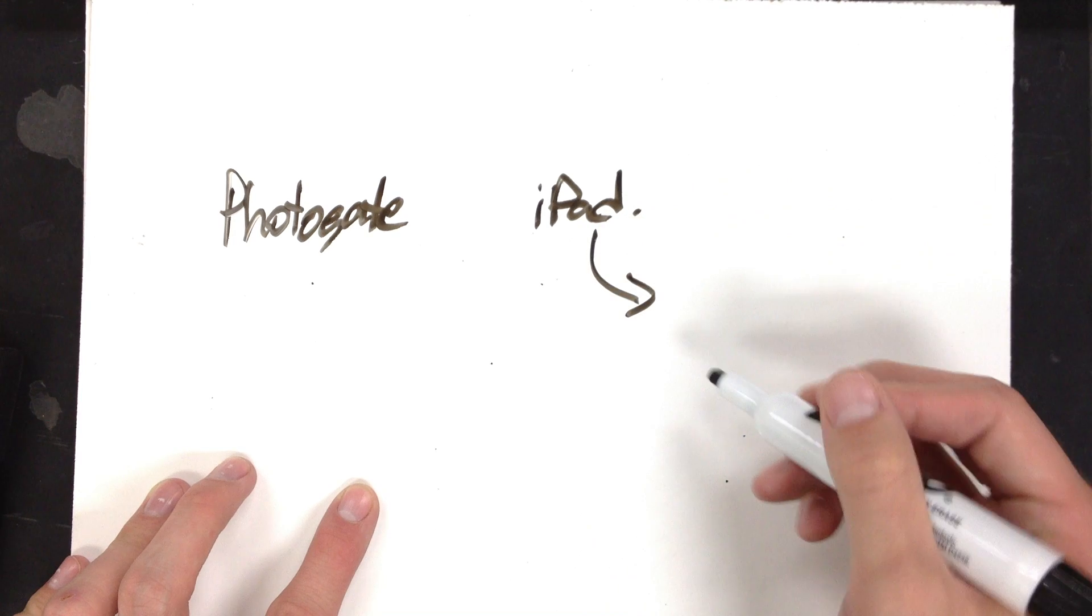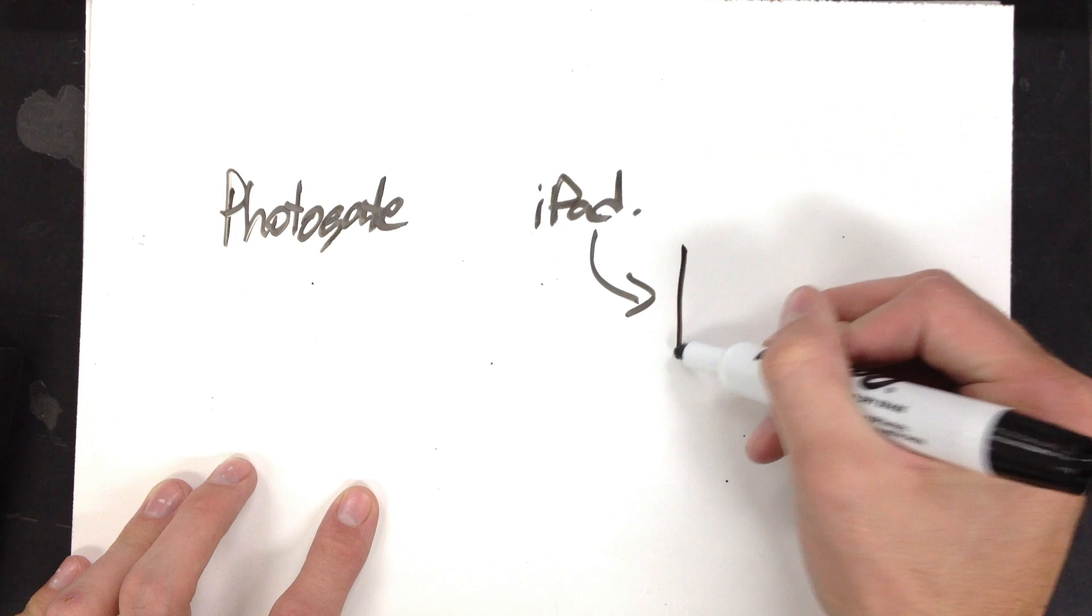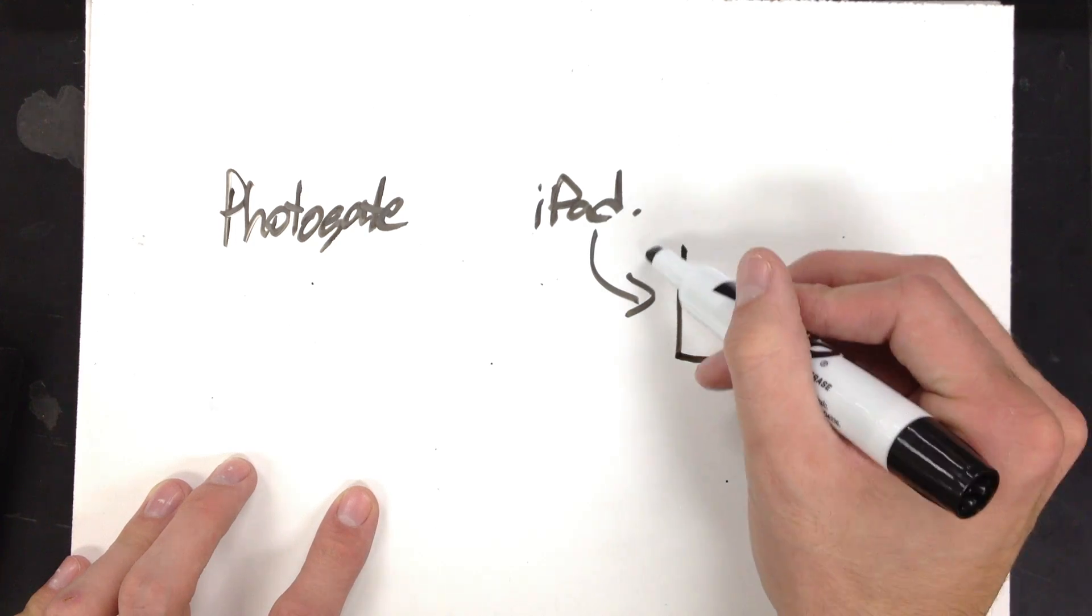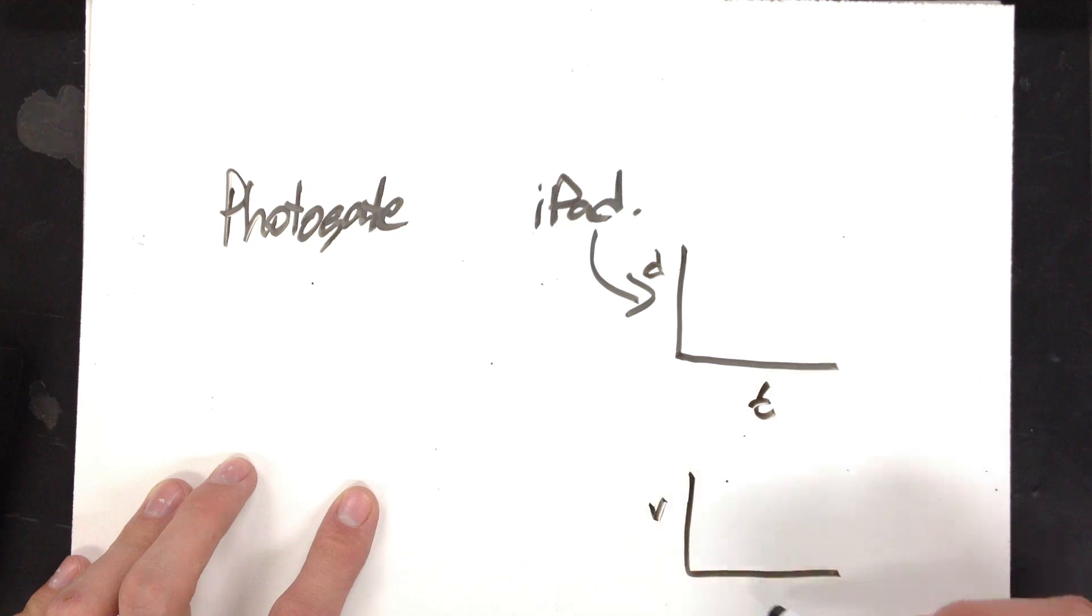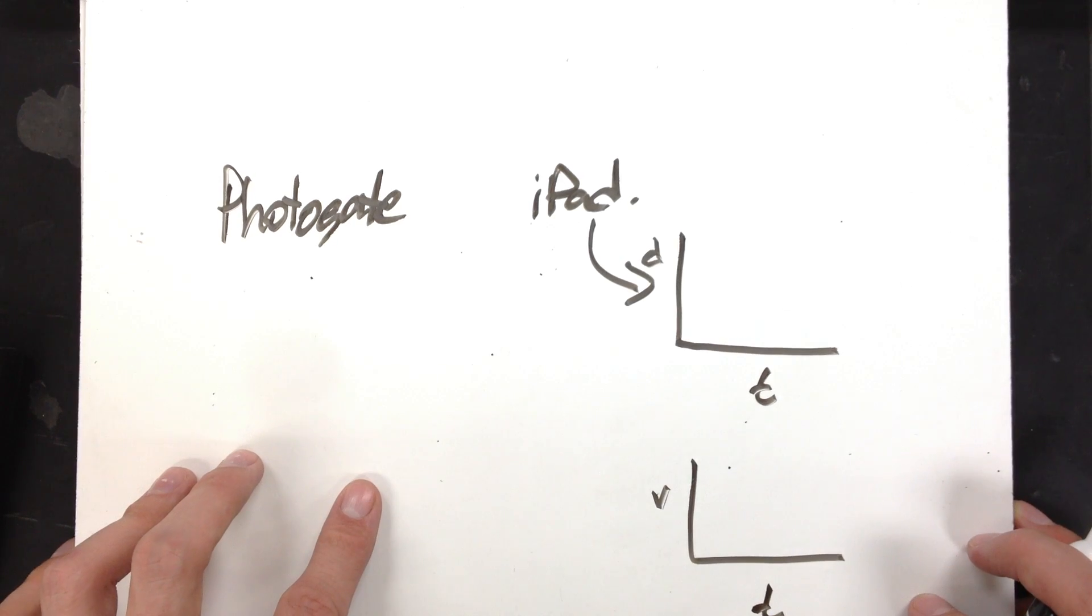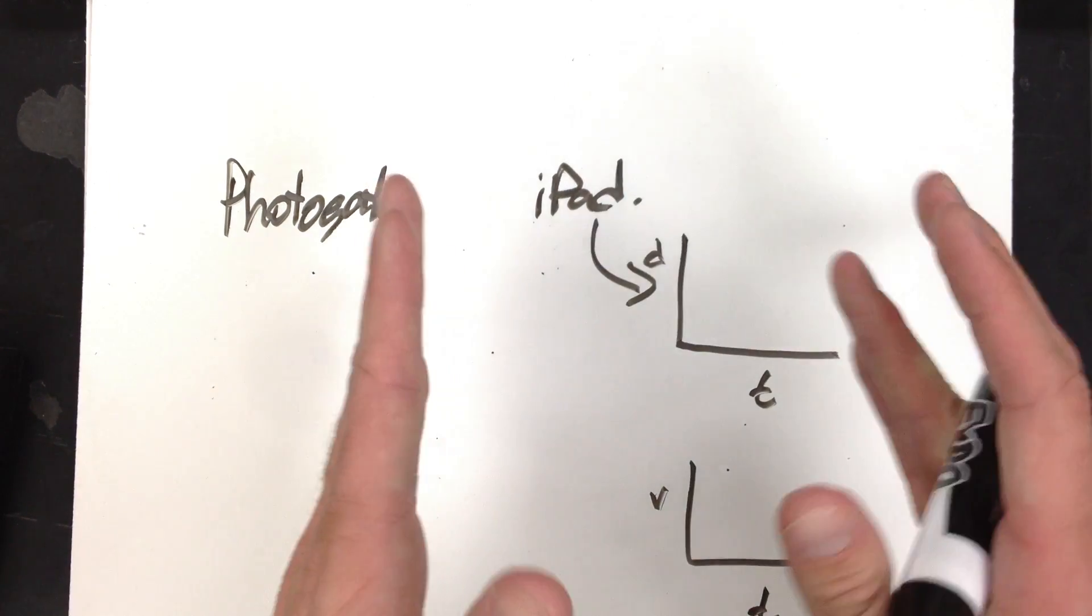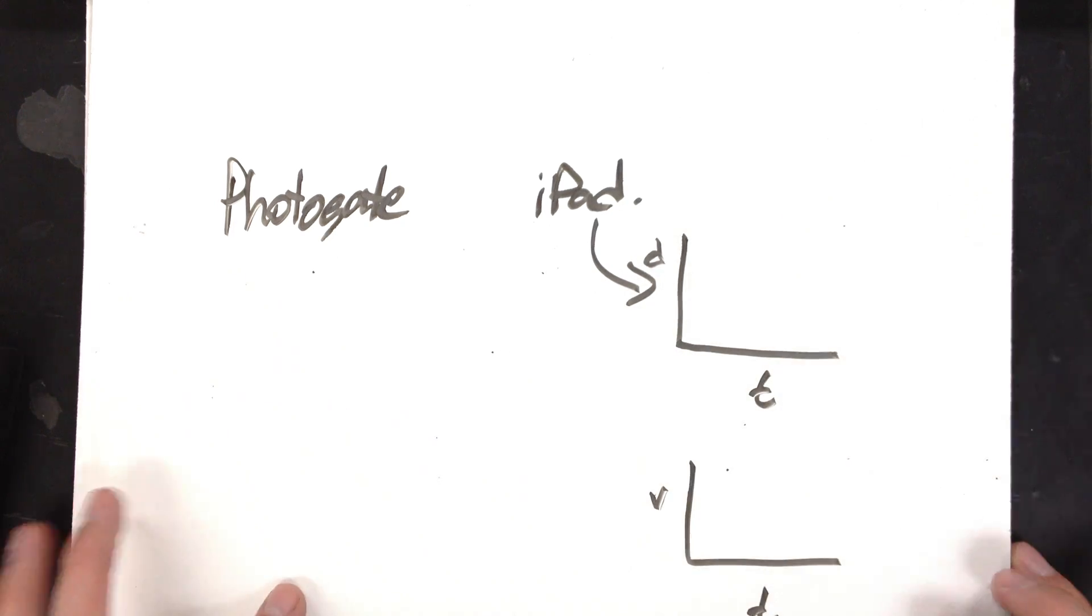The iPads, what we are going to do with those is we are going to plot or really track our cart and it's going to give us a very nice distance versus time and velocity versus time graph. From those you are to sketch what you see and then go from there. That's pretty much all we're going to do with the iPads. It's just going to give us a visual of what our cart is doing.